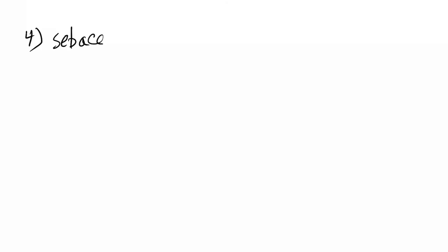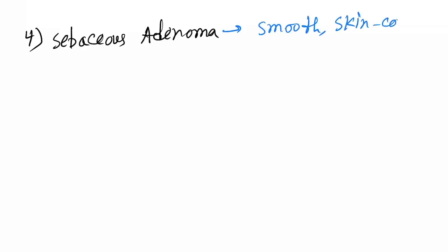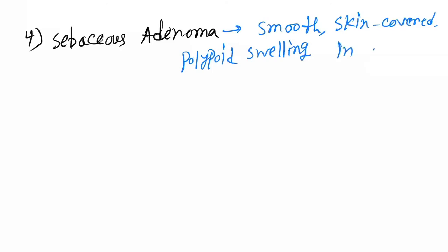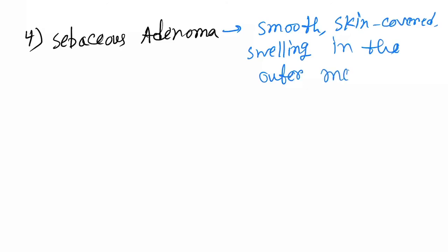The fourth benign tumor of the external auditory canal is sebaceous adenoma. These are smooth, skin-covered, polypoid swellings in the outer meatus.